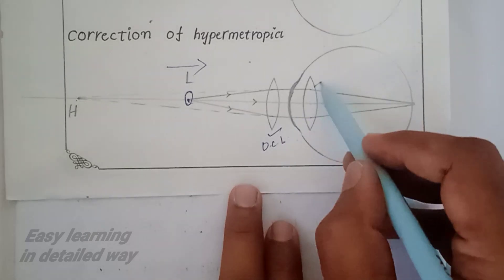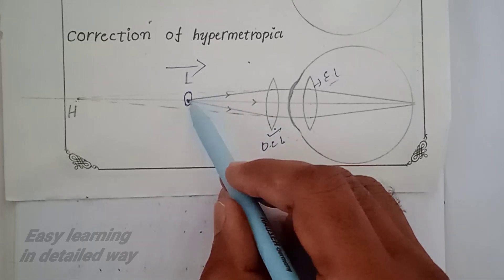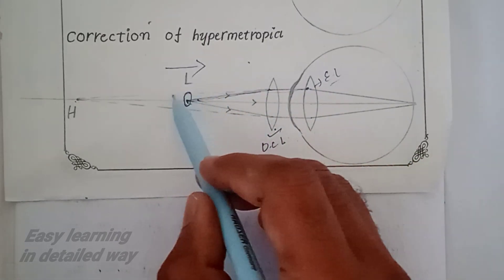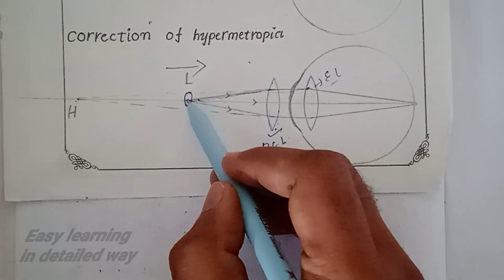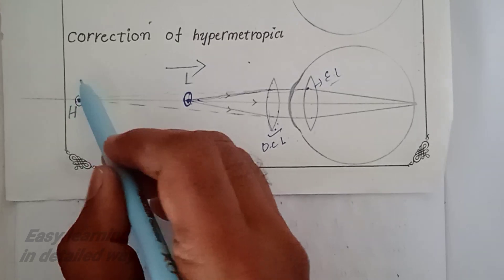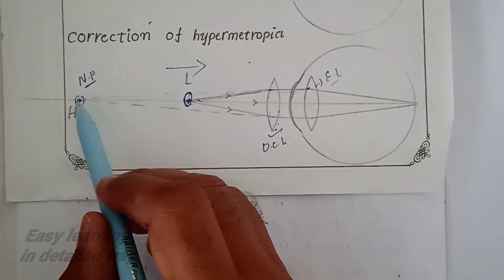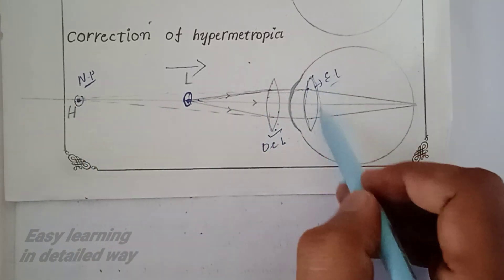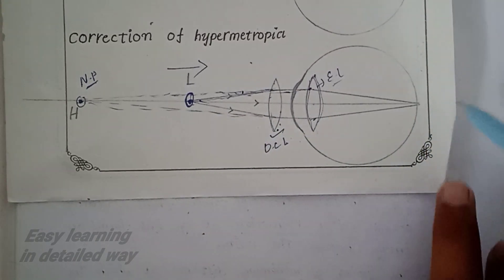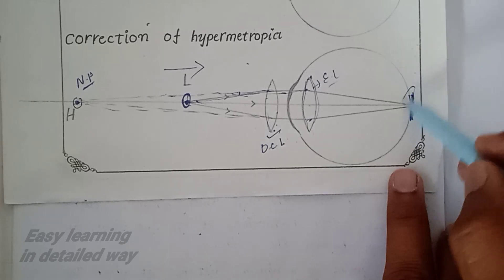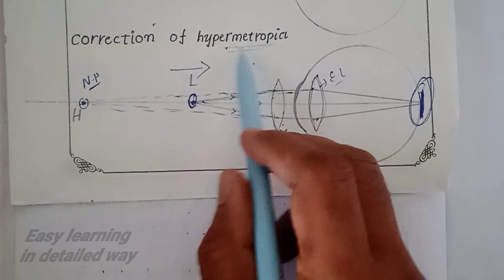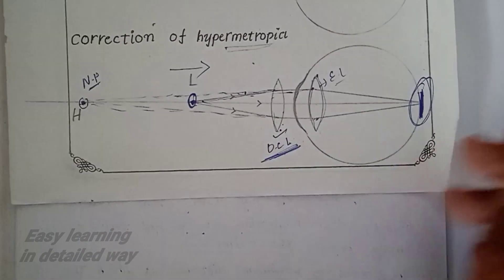This is possible when a double convex lens is used. The object is placed in front of the lens, and the image is formed at the near point of the hypermetropia person. This is the eye defect correction of hypermetropia by using a double convex lens.